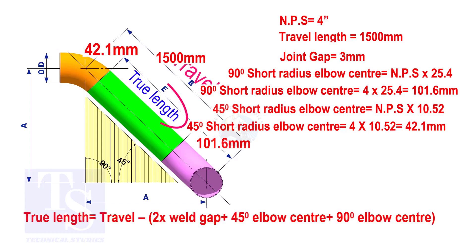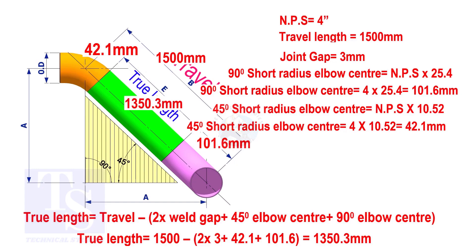To calculate the true length of the pipe, subtract two weld gaps plus both elbow centers from the travel length. The true length of the pipe is 1350.3mm.